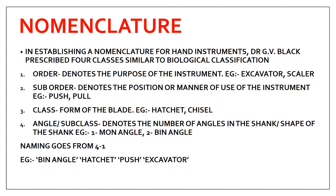The first class is the order, which denotes the purpose of the instrument — why exactly you need that instrument. For example, it can be an excavator, which is used to excavate caries, or a scaler, which is used for scaling. That is the purpose of the instrument.